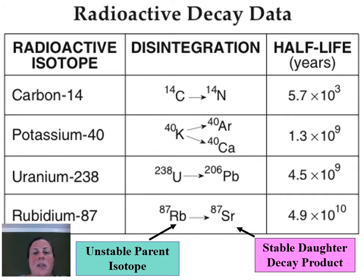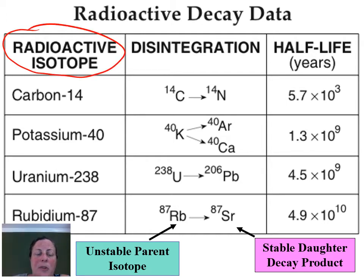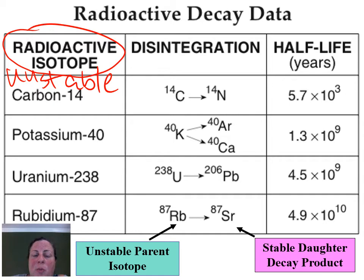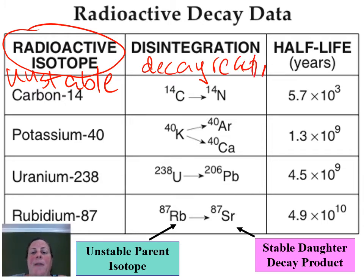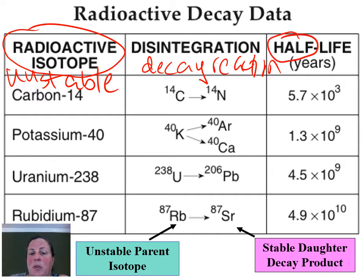This is the reference table section for radioactive decay. You see here we have our radioactive isotopes — these are the unstable parent isotopes. Here is the disintegration, which is what it breaks down into — the decay reaction. And then the half-life is the amount of time it takes for half of the unstable parent to change into the stable daughter.